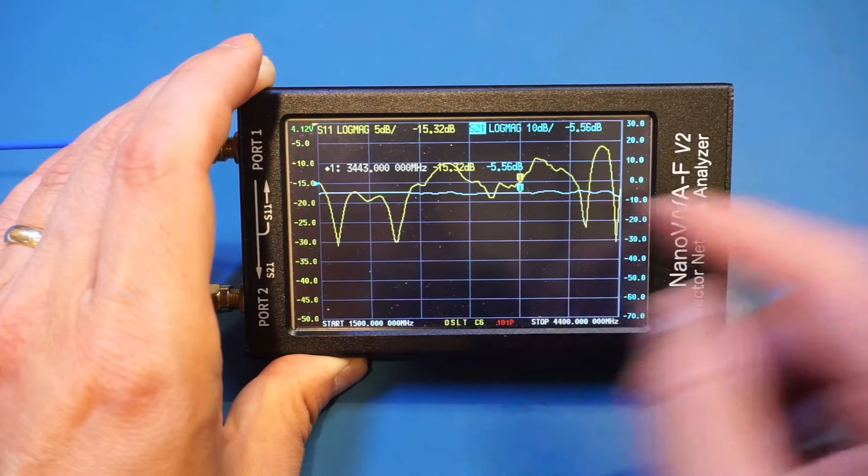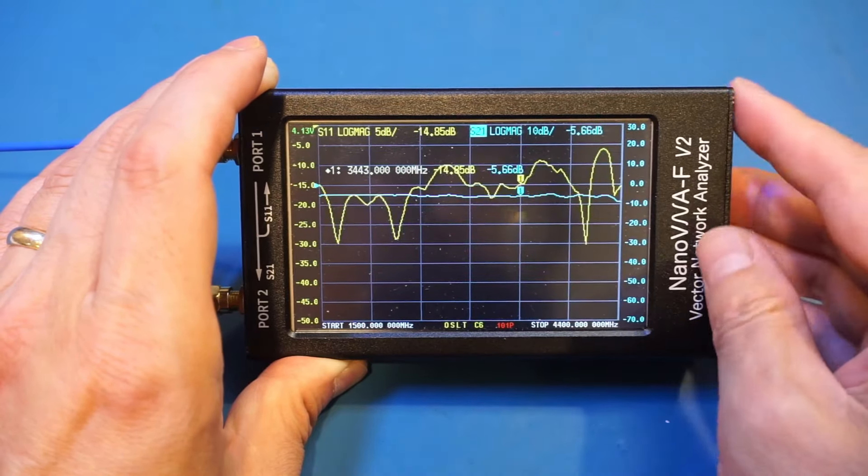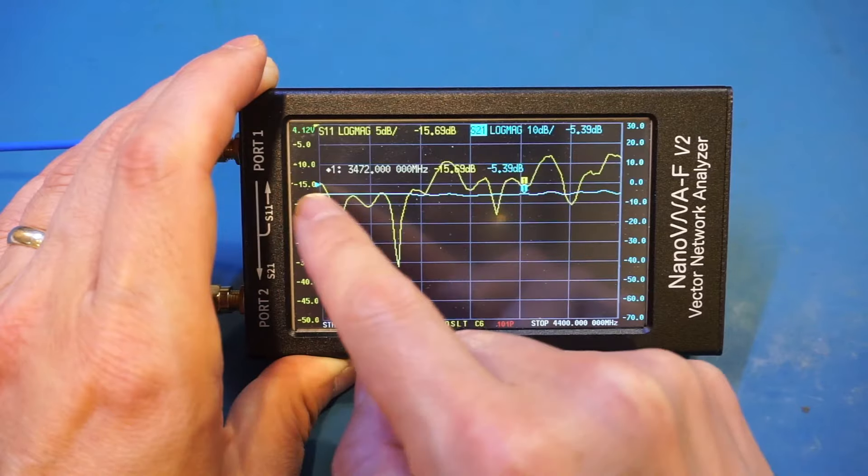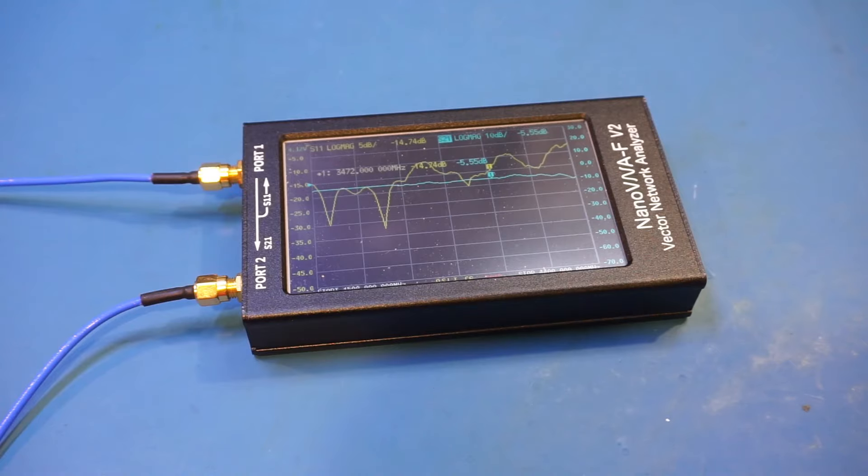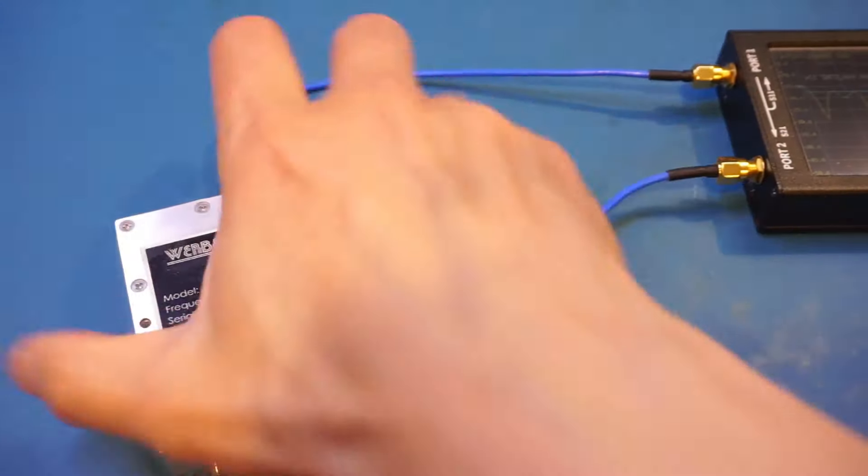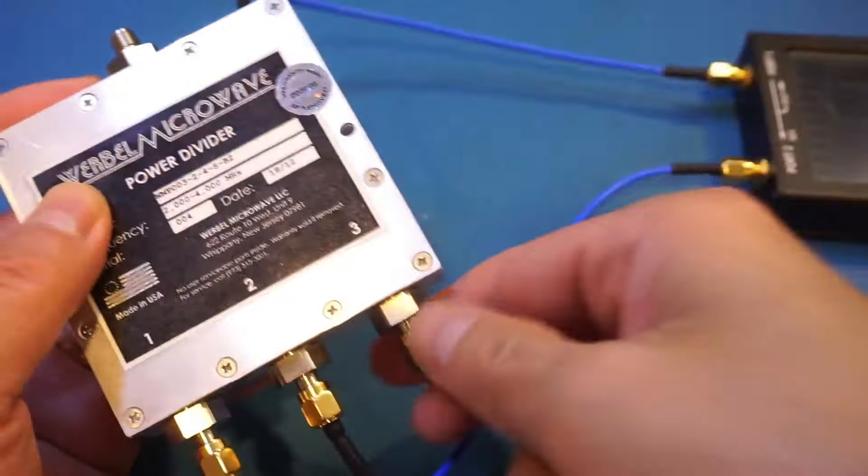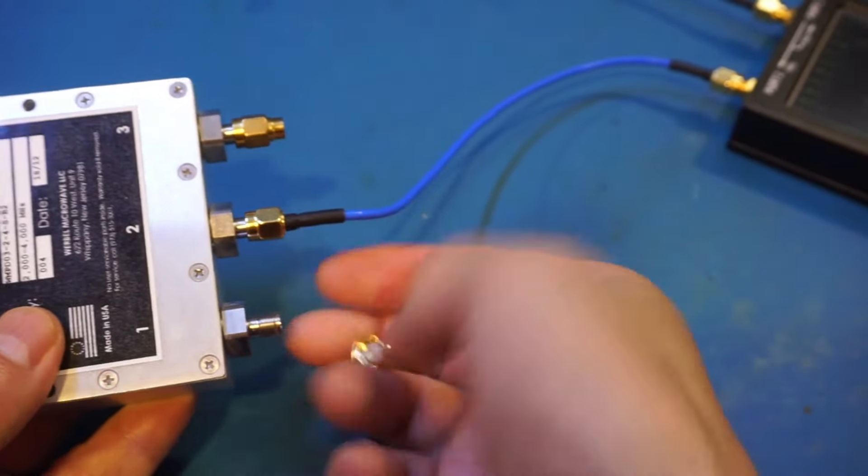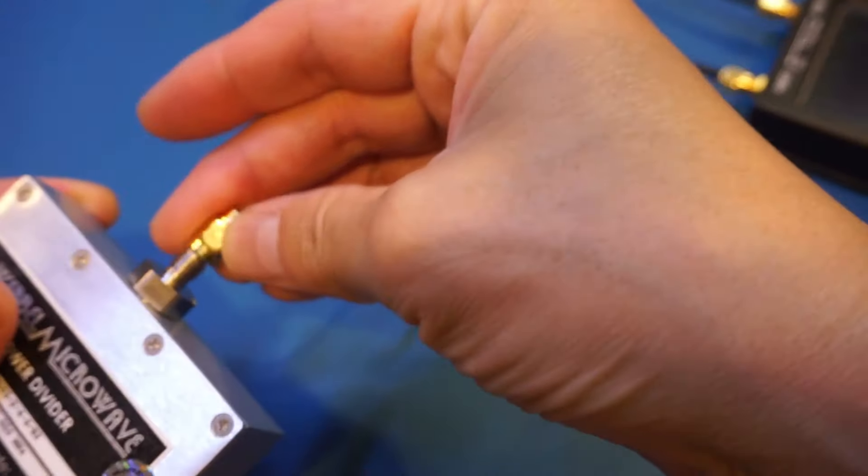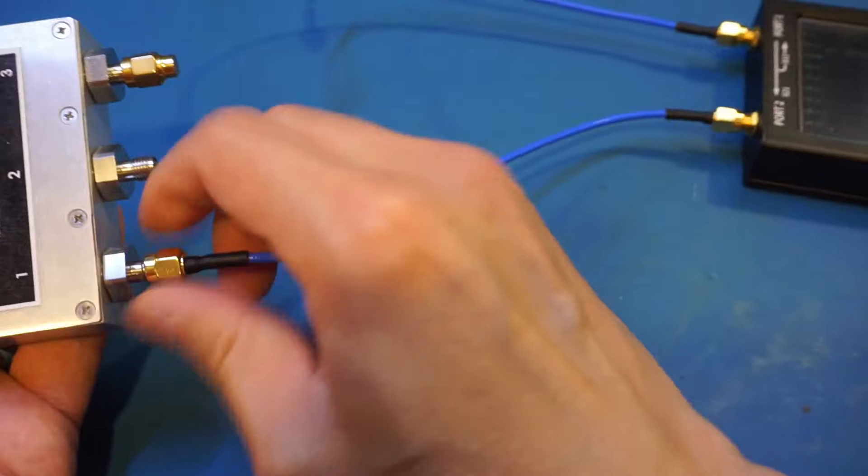You can see that for the S21 we are pretty flat and roughly the same range at minus five, minus six decibels. But for the S11 we are seeing a little bit of different behavior here. What I'm going to look at next is the isolation between these ports here. So for that I'm going to terminate the input port. Let's terminate the input.